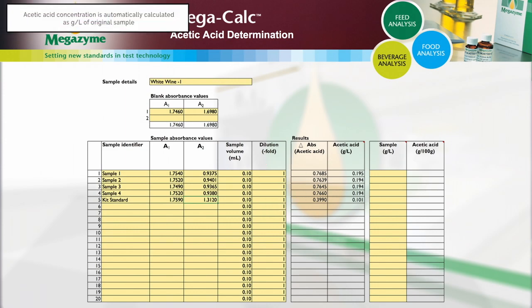When all of the data has been entered, the concentration of acetic acid in the sample is automatically calculated and given as grams per litre in the original sample.